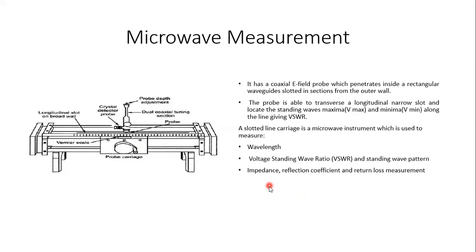You can measure wavelength, reflection coefficient, return loss - there are so many parameters which can be measured with the help of the slotted line. The slotted line is a modified form of the rectangular waveguide.